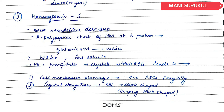The third type is Hemoglobin S. This is also known as Mendelian dominant hemoglobin because Glutamic acid is replaced by Valine at the sixth position of the Beta polypeptide chain of Hemoglobin A. Hemoglobin S is less soluble, so what happens? It precipitates as crystals within RBCs, which causes cell membrane damage.